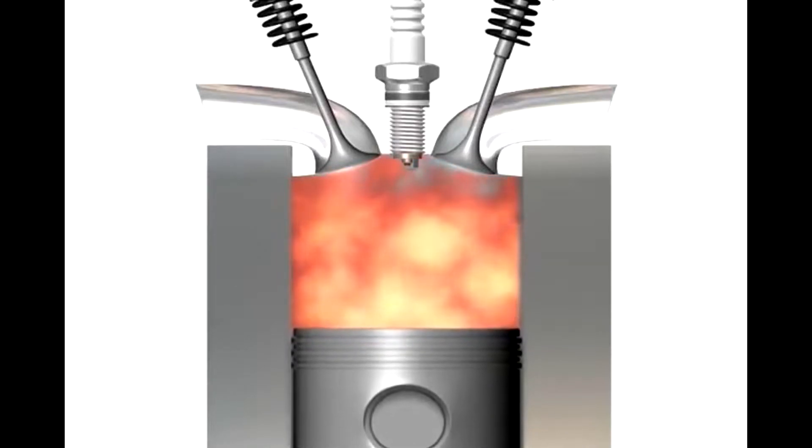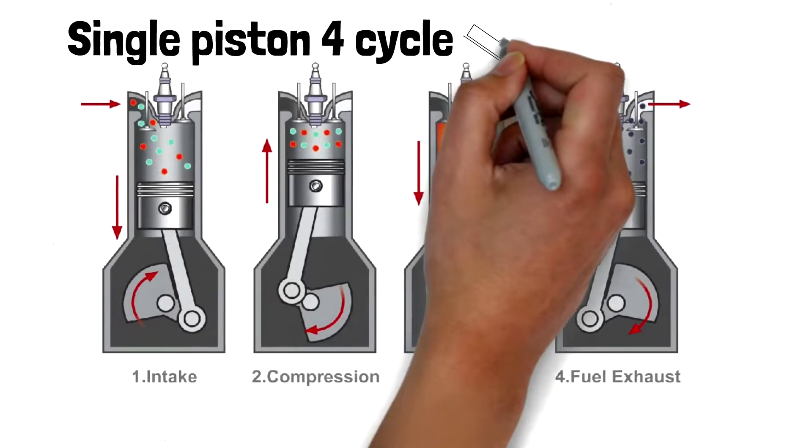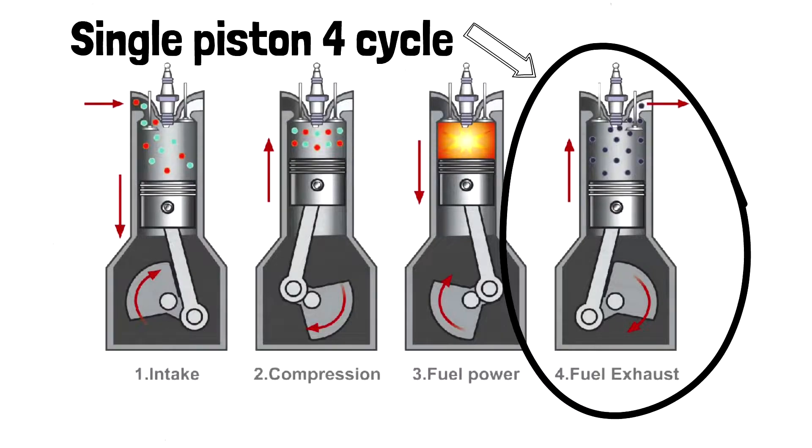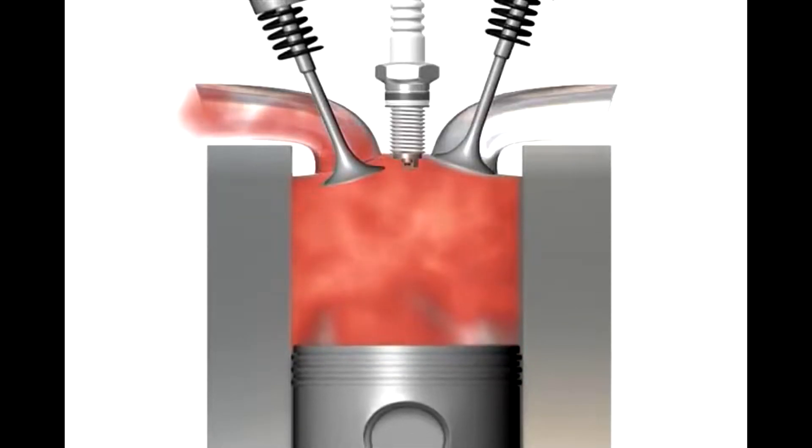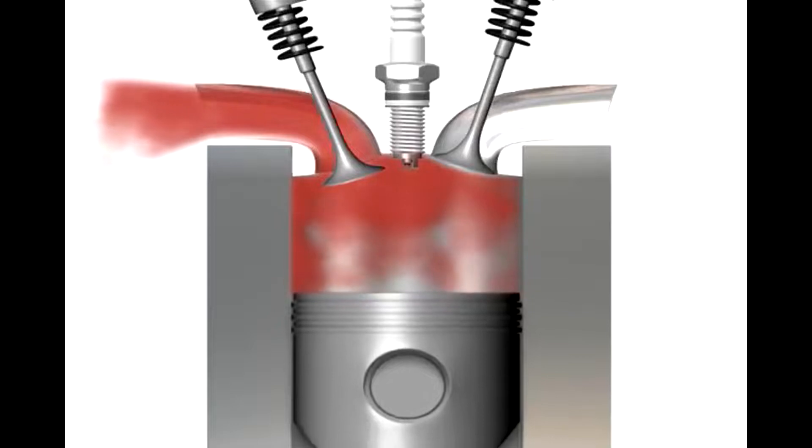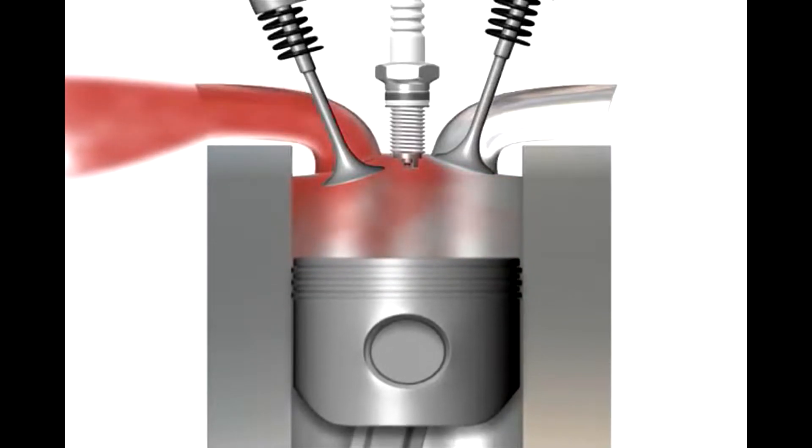A connecting rod transfers this power to the crankshaft. Finally, exhaust. The piston comes back up pushing the spent mixture out through open exhaust valves and the exhaust port.